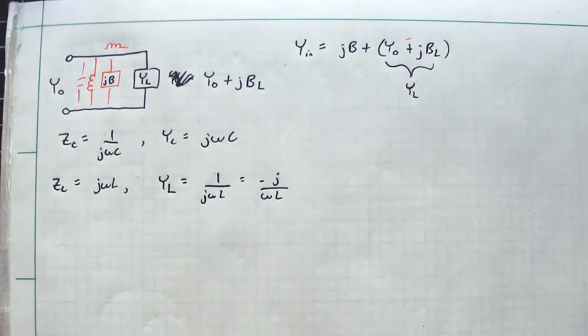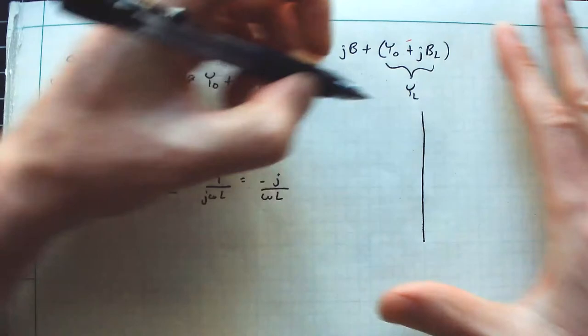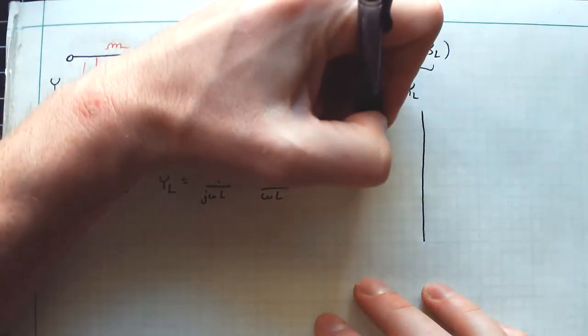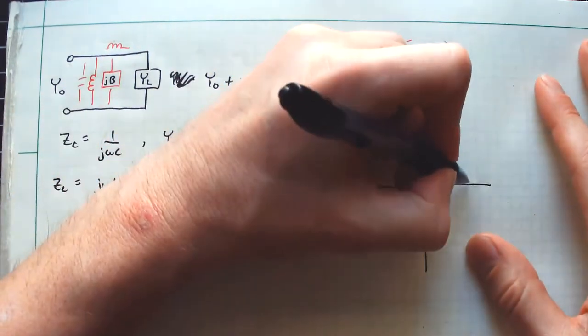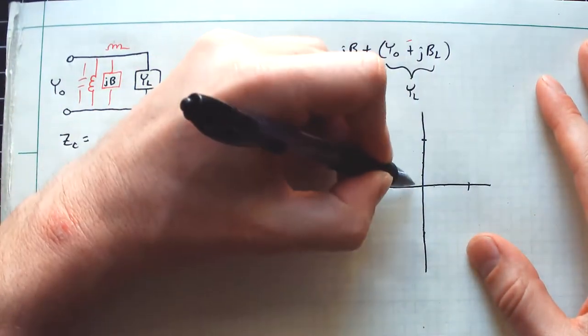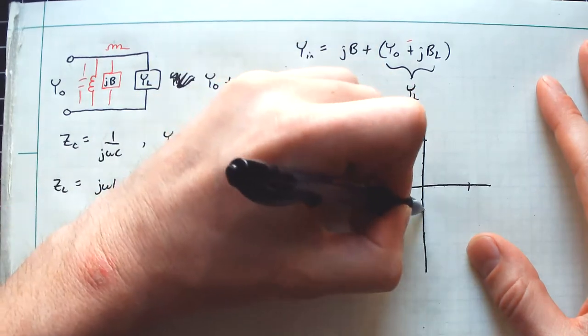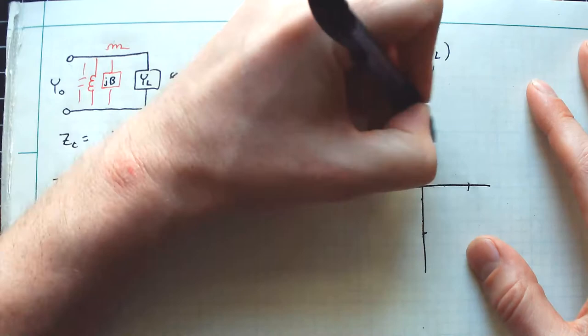So algebraically, again, that should kind of make sense. But let's think about this in terms of the Smith chart. And this is where I think the book kind of lets us down.